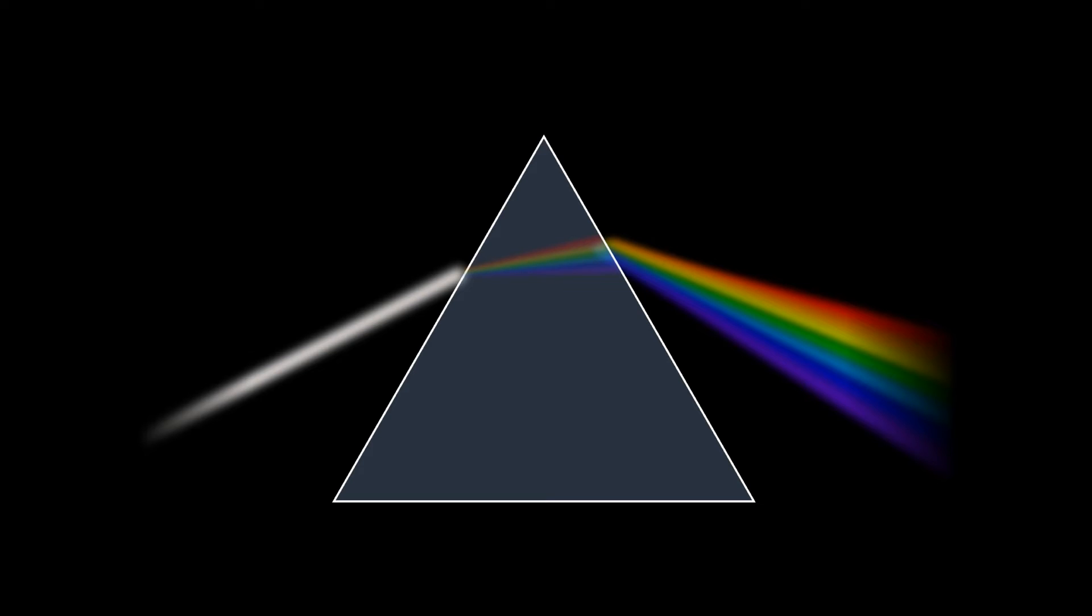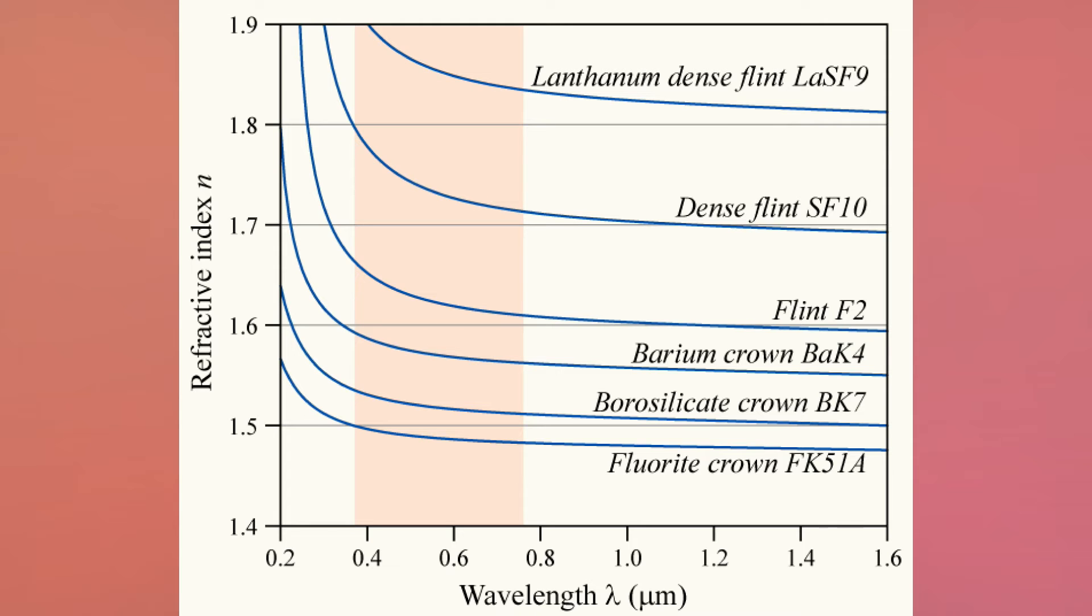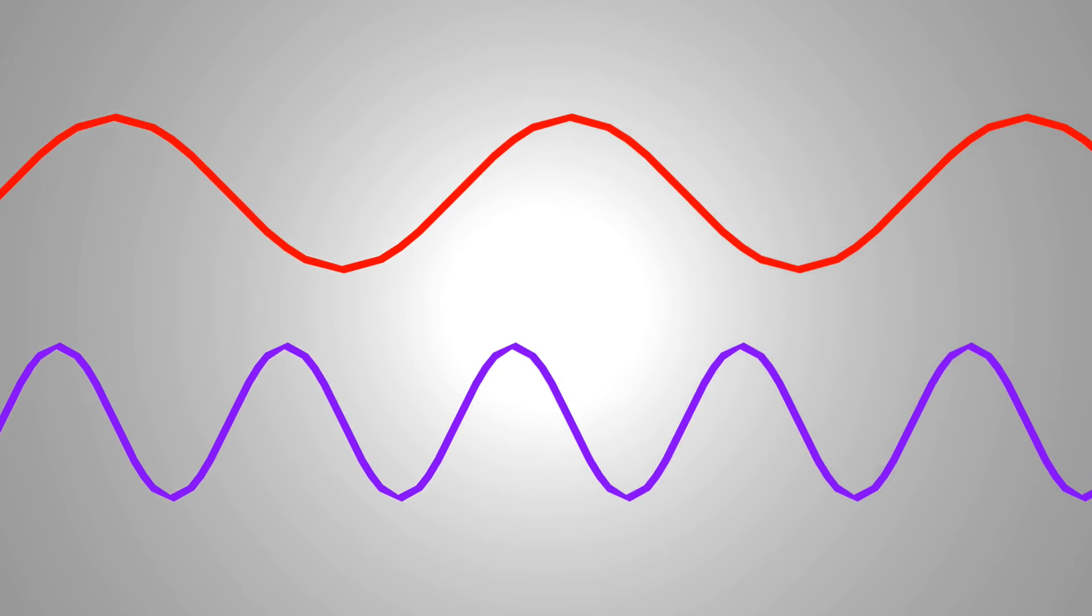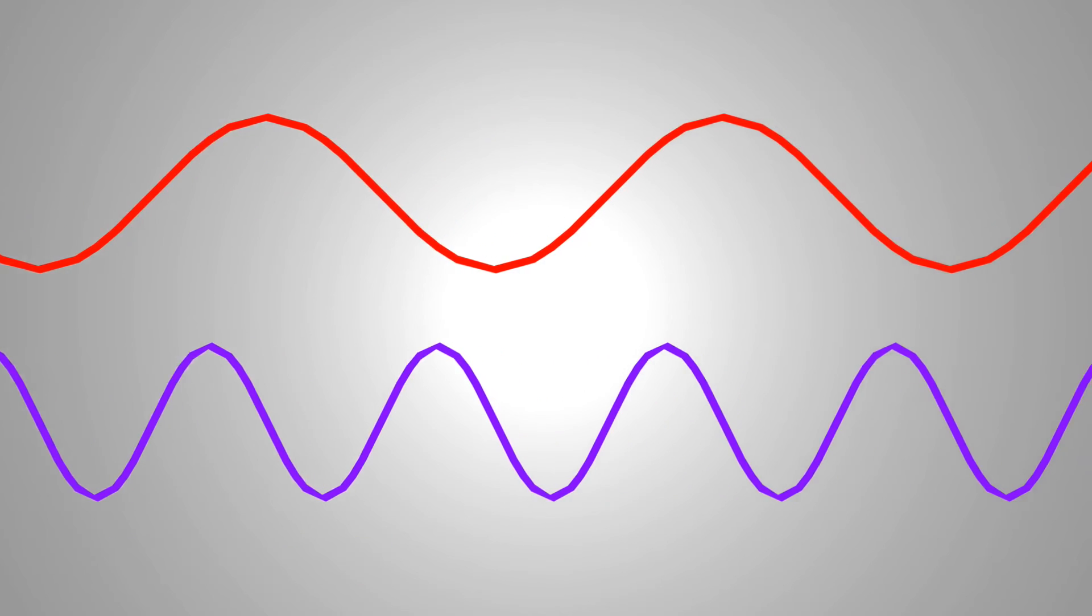At least until you add one more rule. A refractive index, the rate light travels through an object compared to a vacuum, changes with wavelength. With this, we now know that red light bends less than violet light does because the wavelength of violet is higher than red.